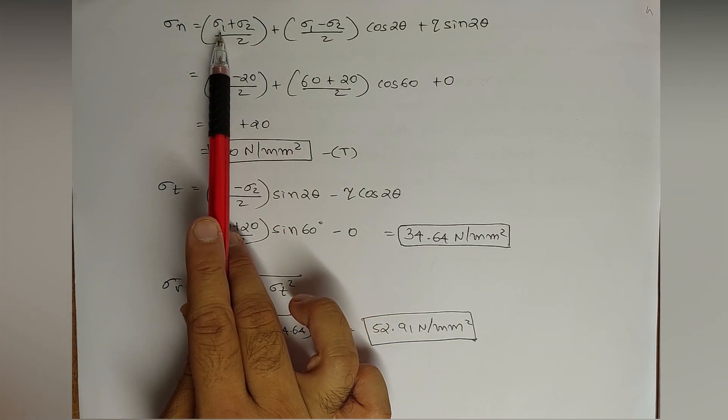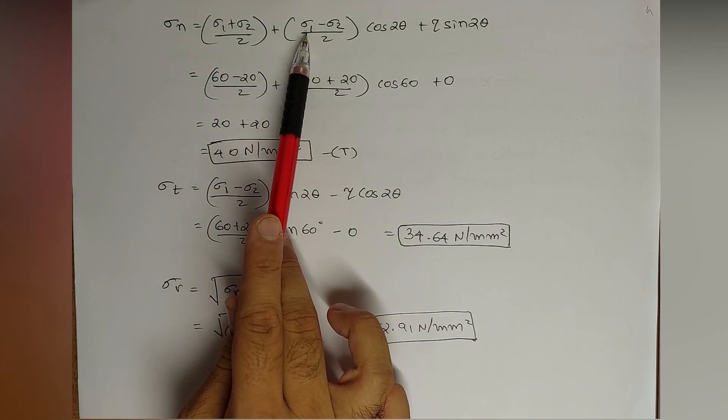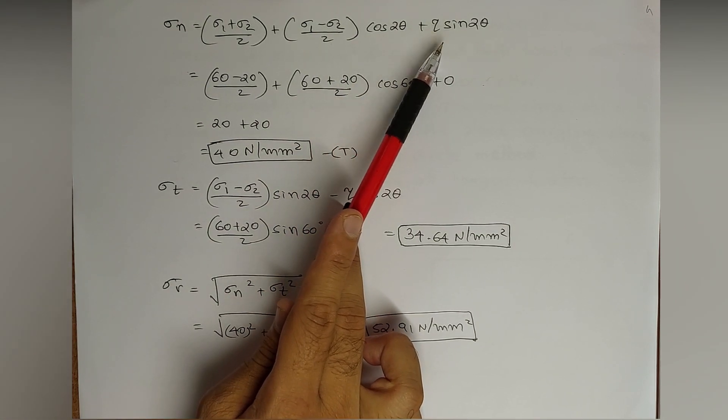Sigma_n equals sigma 1 plus sigma 2 by 2, plus sigma 1 minus sigma 2 by 2 cos 2 theta, plus tau sine 2 theta.